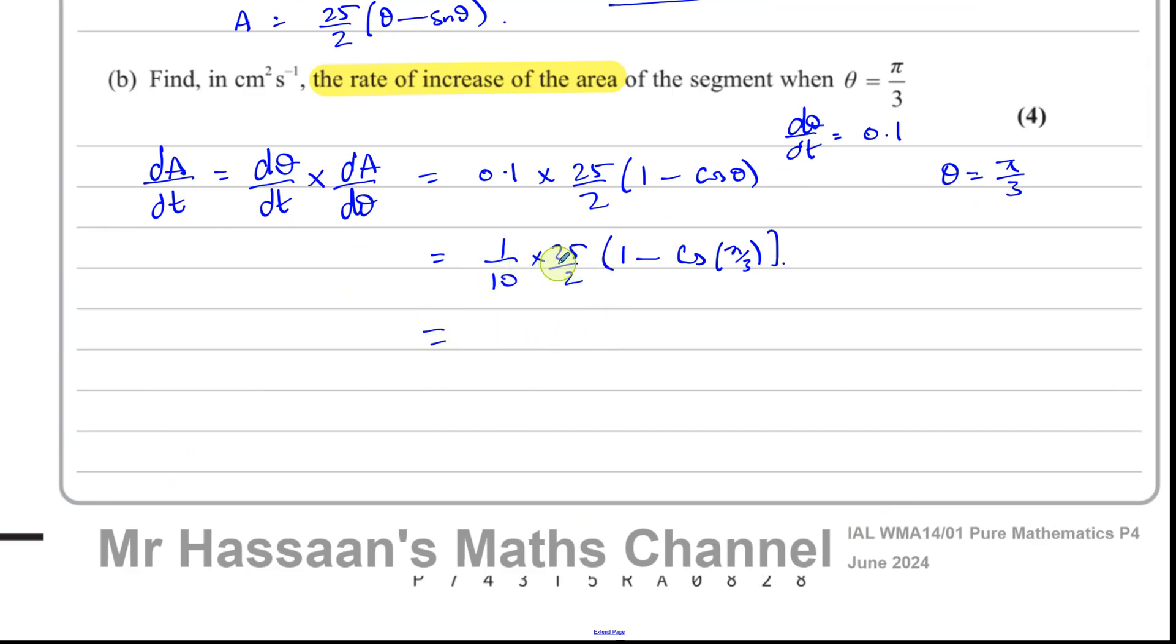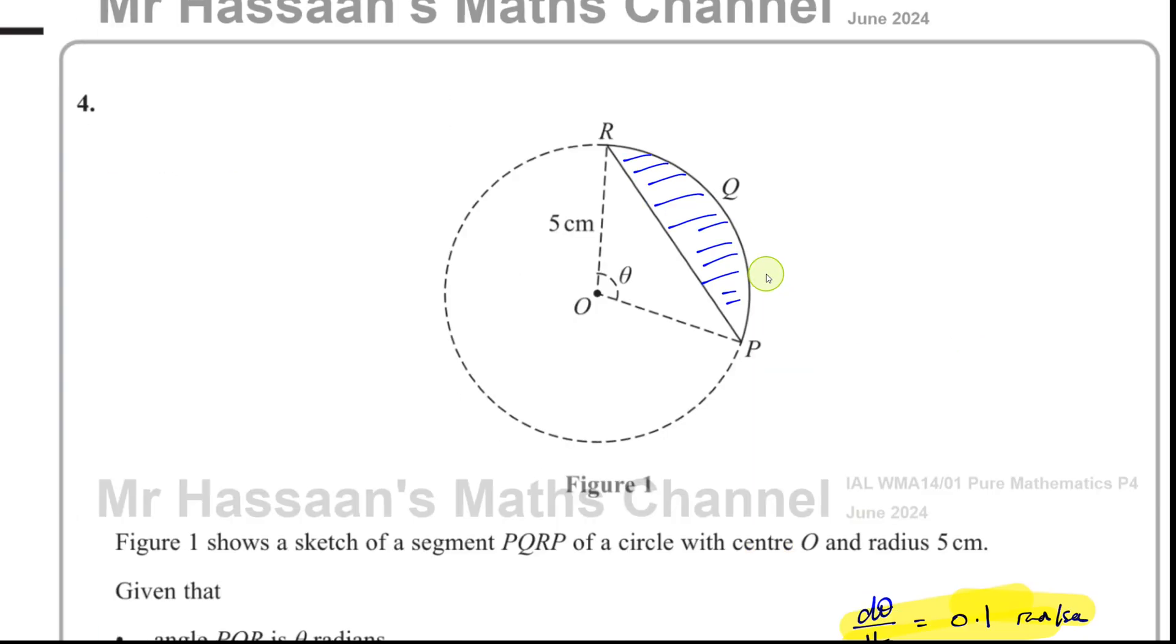So this is going to give us, let's just simplify this. 5 goes into 10 twice. So left with 5/4 times 1 minus 1/2, which is 5/4 times 1/2, which is 5/8. And it's in centimeters squared per second. So there is the answer to this part of the question, question part B of number 4. And that is the whole of this question.